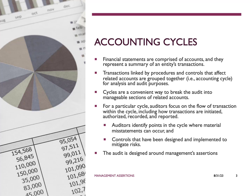For example, during the planning stage, auditors assess the company's operations and identify the relevant accounting cycles — for example, revenue, expenditure, etc. They gather information about the company's internal controls, risk, and potential areas of misstatement. By breaking down the audit process around accounting cycles, auditors can systematically assess each aspect of an organization's financial operations and provide reasonable assurance about the accuracy of its financial reporting.